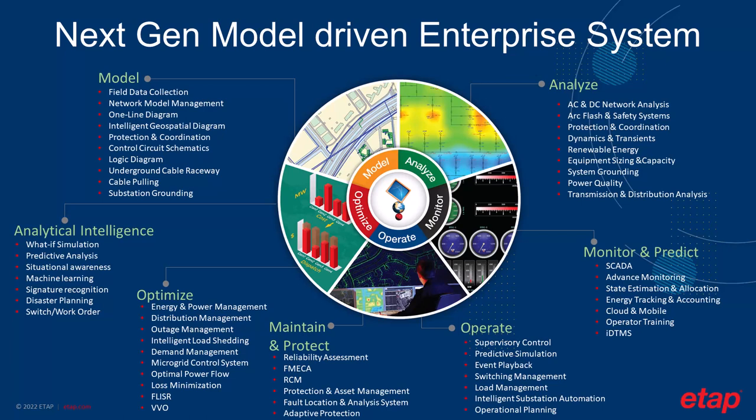The concept of the ETAP system from back in 1986 till now has been to provide the necessary tools to perform modeling, analysis, optimization, and generating geospatial diagrams of the electrical network. From generation of the model, we move into the analysis phase, where we provide a complete set of over 100 analysis modules for complete network analysis, arc flash and safety, protection and coordination, dynamics and transients, renewable energy, equipment sizing, system grounding, power quality, and transmission and distribution analysis.